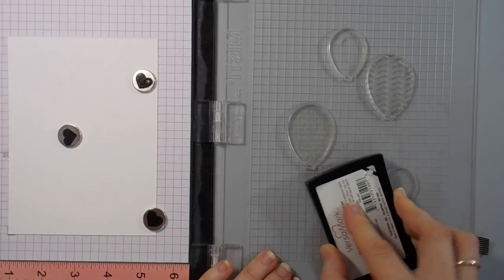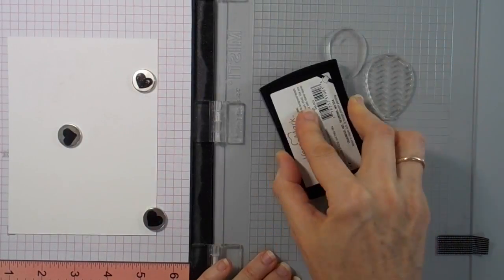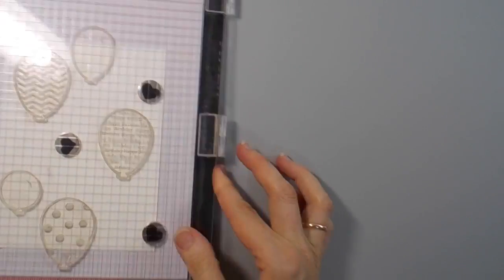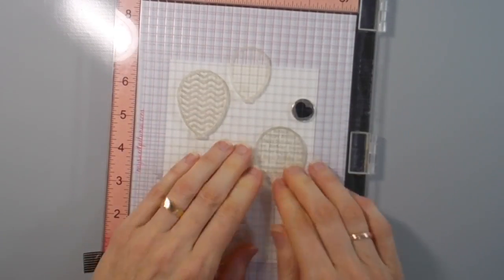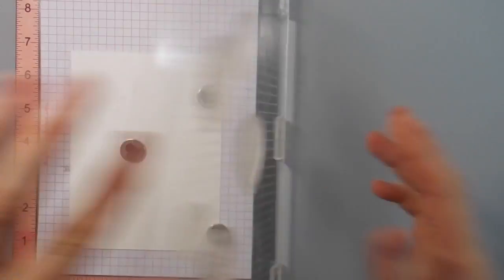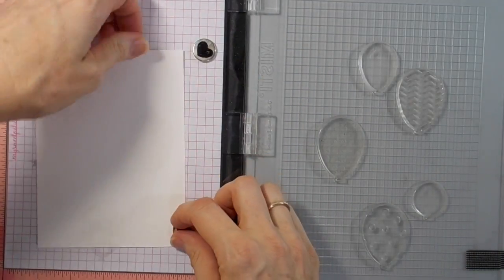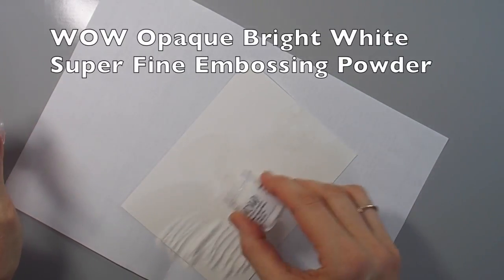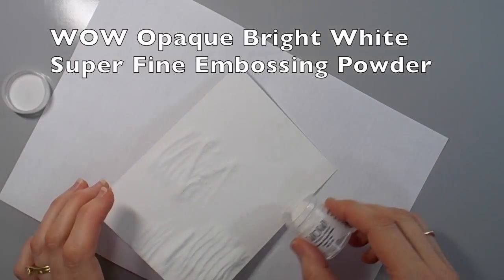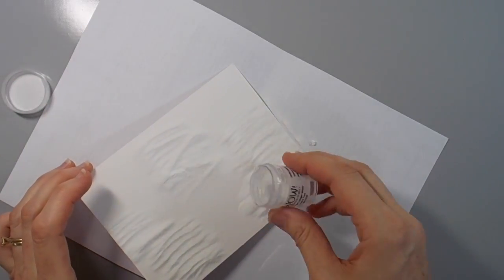This is the card that I will use the Tim Holtz Distress Oxide inks on. I'm using five of the fabulous balloon stamps this time and I'm stamping them in Versamark clear embossing ink. I will be adding my much loved WOW Opaque Bright White Superfine Embossing powder over the top.